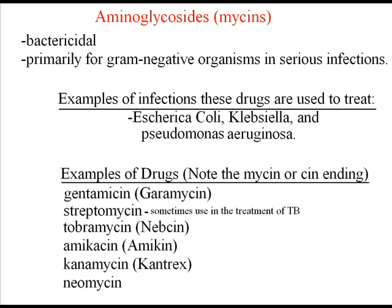Common drugs in this category include gentamicin, streptomycin, and neomycin. Notice either 'mycin' or 'cin' is in the ending of the word — that's a good indicator. Streptomycin is also used to treat tuberculosis in some cases.